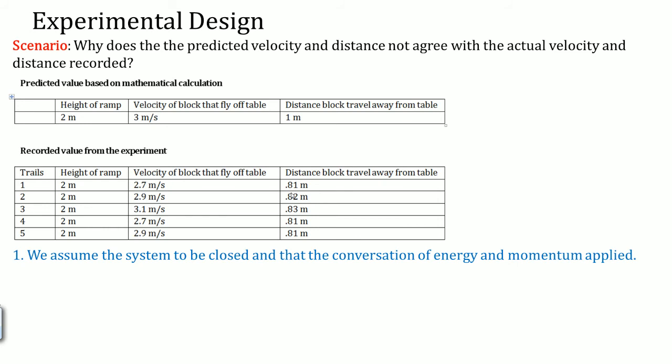Just experimental design, think about what is the assumption that you made. One, you assume that the system is closed and conservation of energy and momentum is applied. That doesn't work. Energy was actually lost to thermal and drag. Thermal is because the ramp, we try to say it's frictionless, but there is going to be friction. And there's drag because there's air resistance as the block is flying in the air.